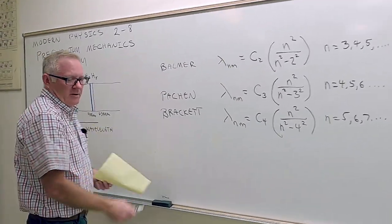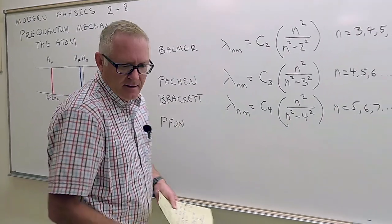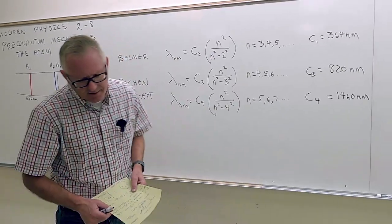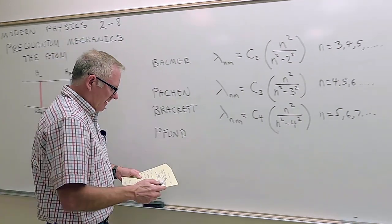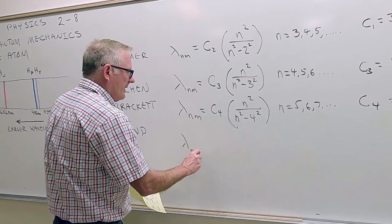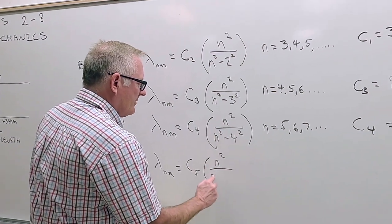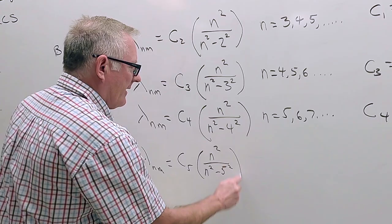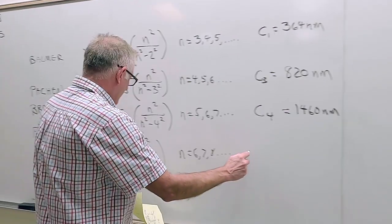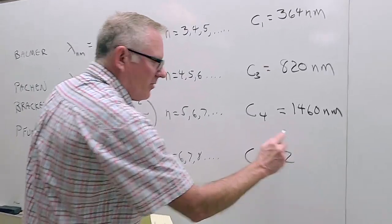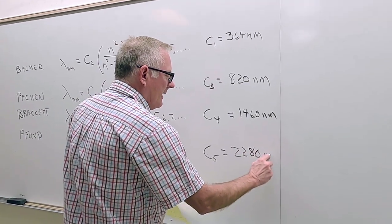There's even another one — Pfund. This one gives wavelength in nanometers equals C5 times n² over (n² − 5²), where n starts at 6, 7, 8, and so on. C5 is even larger: 2280 nanometers.